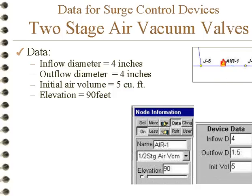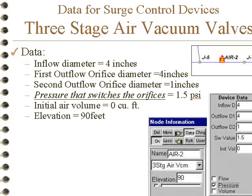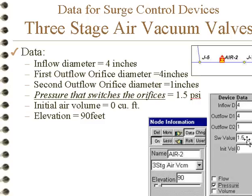There are also three-stage air valves, which typically have the main inflow and outflow orifices of the same size. They have a second orifice that will be activated on either pressure, flow, or volume. This shows pressure as the activating variable, and this will activate at 1.5 psi — that's the pressure that will activate the air vacuum valve.